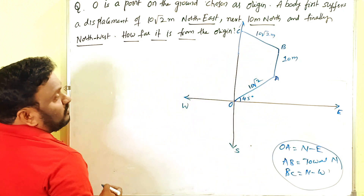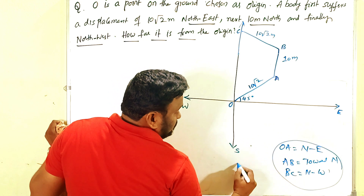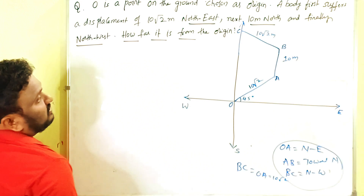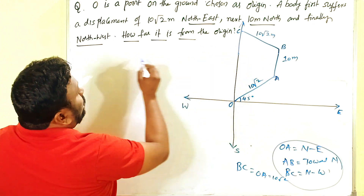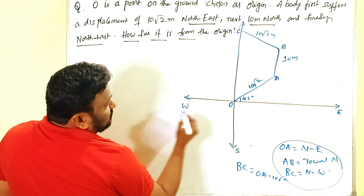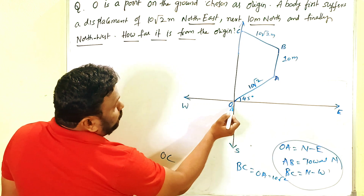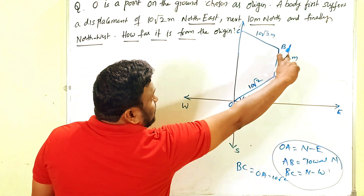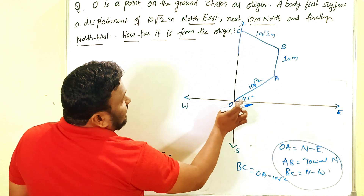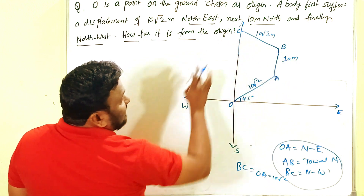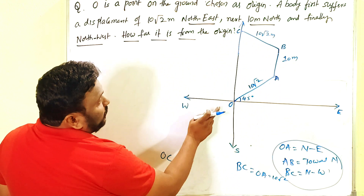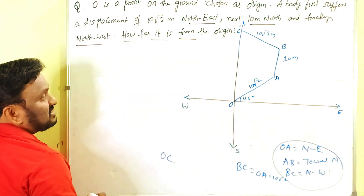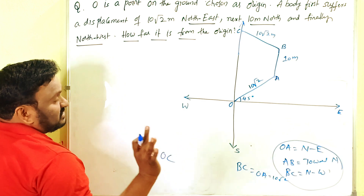From the diagram, OA equals BC. Why? Because from origin to point A is quite similar in magnitude to BC. So OA = BC = 10√2 meters. That is the given data. What we have to find out is how far it is from the origin — the displacement from O to C. OA, AB, and BC are the individual displacements, but we need to find the total distance from O to C.